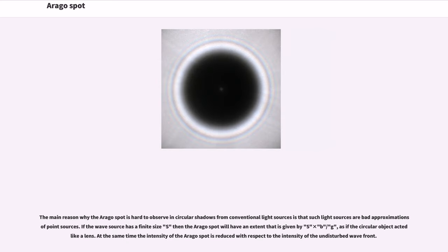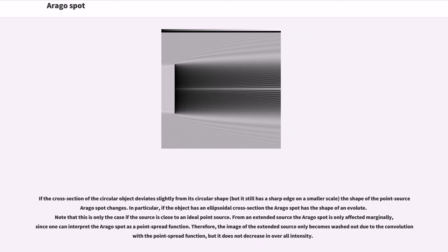The main reason why the Arago spot is hard to observe in circular shadows from conventional light sources is that such light sources are bad approximations of point sources. If the wave source has a finite size S, then the Arago spot will have an extent that is given by S times B over G, as if the circular object acted like a lens. At the same time, the intensity of the Arago spot is reduced with respect to the intensity of the undisturbed wave front.